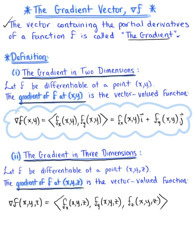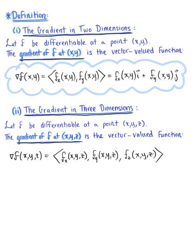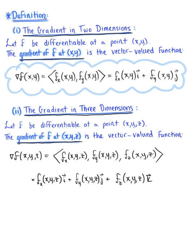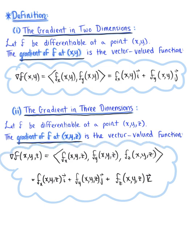In addition, we can use standard unit vector form and write the gradient vector in space as: f_x(x,y,z) i-hat plus f_y(x,y,z) j-hat plus f_z(x,y,z) k-hat. So we now have our two gradient vector formulas — the gradient vector in R2 and the gradient vector in R3. Let's go ahead now and look at some examples of computing the gradient for a scalar valued function.